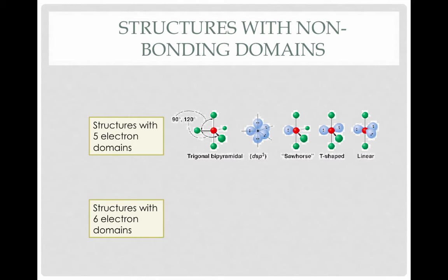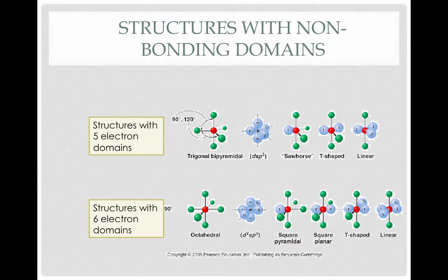Structures with six electron domains: six bonds give us an octahedral structure. Remove one bond and make it a non-bonding pair, and you get square pyramidal. Remove two bonds and make them non-bonding pairs, and you get square planar. Remove three, you get T-shaped, and remove four, and you're back to linear.